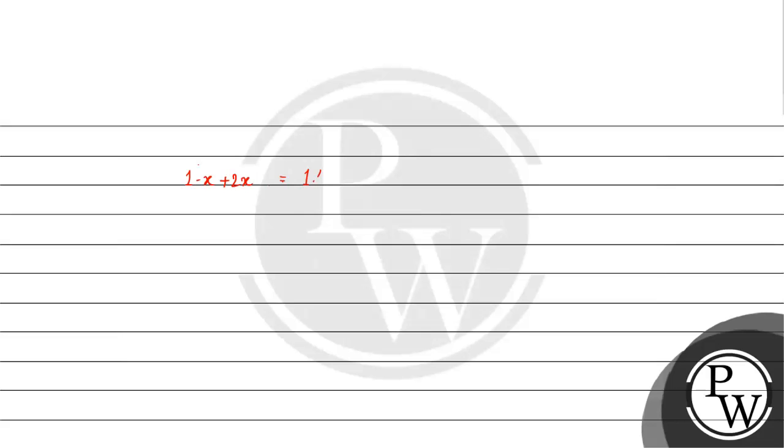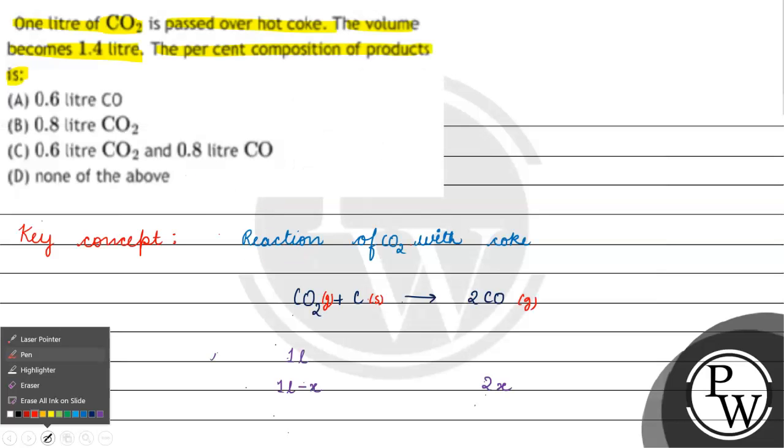How much is given in the question? 1.4. So 1 plus x equals 1.4, which means x equals 0.4 liter.